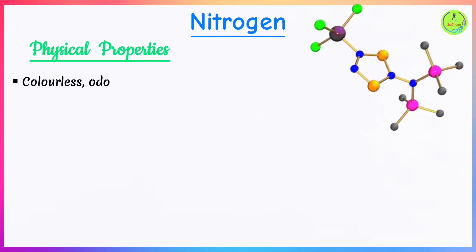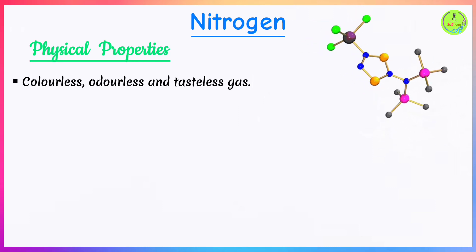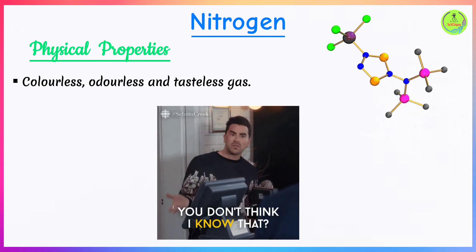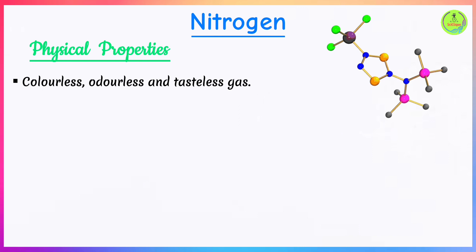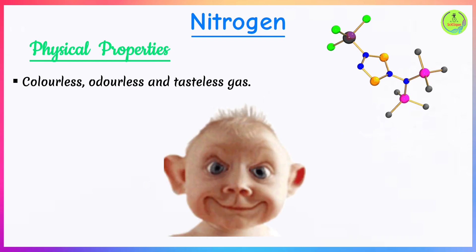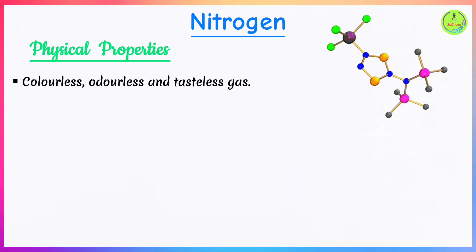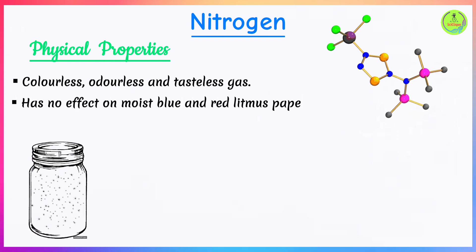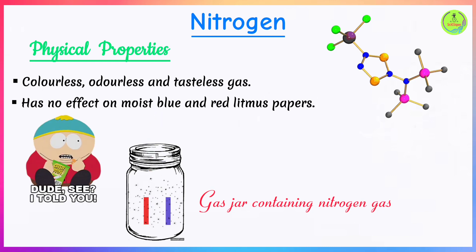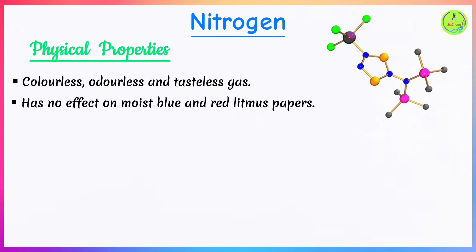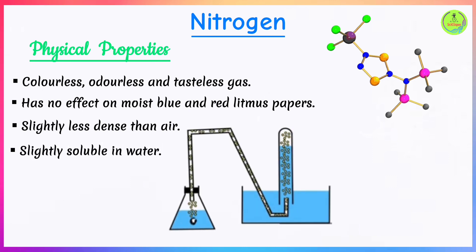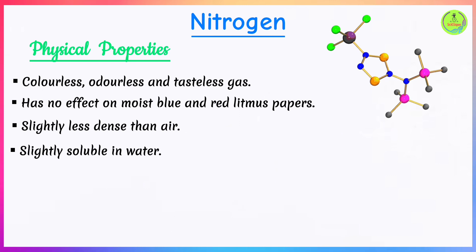The physical properties of nitrogen gas: it is a colorless, odorless, and tasteless gas — which makes sense since it is the main component of air. It is a neutral gas with no effect on moist litmus paper, is slightly less dense than air, and is slightly soluble in water, which is why it can be collected over water.